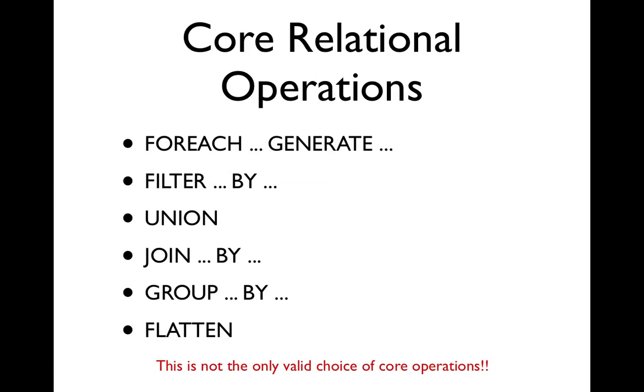So to recap, the core operations in pig are foreach generate, which lets you select and add new columns. Filter, which lets you throw out rows. Union, which lets you combine two relations. Join, which matches up rows from two relations that have a common value. And then group, which gives us nested bags. And flatten, which is just the inverse of group.